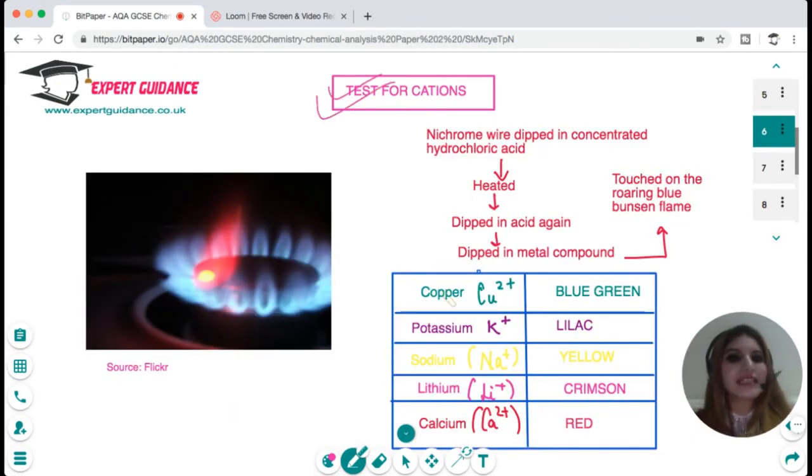We need to know what are the tests for cations, that is the metal ions. The first test that we do for any cation is a flame test. We take a nichrome wire, dip it in concentrated hydrochloric acid and heat it. We then again dip it in acid and then dip it in the metal compound, and then we touch it on a roaring blue flame of the Bunsen burner.